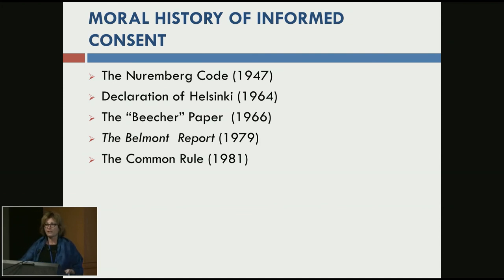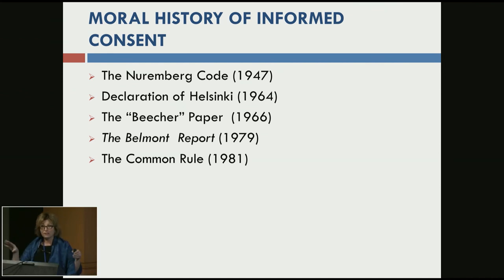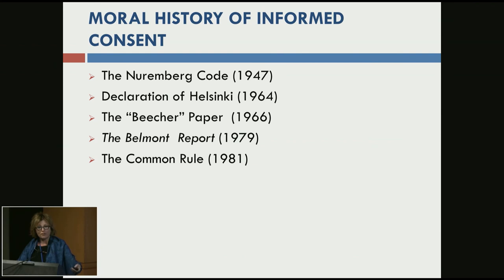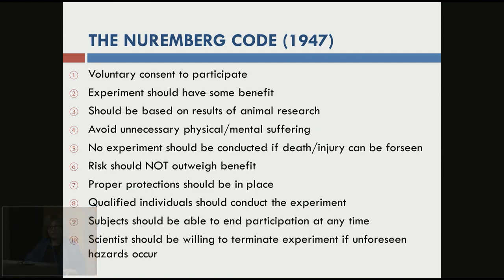The moral history of informed consent is complex and based largely on the history of research ethics, which forms what we do in a clinical context. The Nuremberg Code was an American-authored document in response to the Nazi war atrocities, established during the Nuremberg trials in 1947. Some people think that because it was developed so long ago it's old and outdated, but this is actually still a code that we must follow.